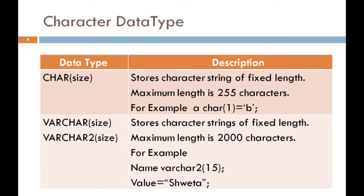Let's see an example. Suppose the column name is 'name', which has data type VARCHAR2 with a size of 15 characters. Suppose I enter the value 'Shweta' for name — only 6 characters are used, so the remaining characters do not occupy memory. In VARCHAR2, unused memory space is not wasted. While in CHAR, null characters are placed in the remaining space and they occupy memory. That's why in CHAR, memory may be wasted, but in VARCHAR2, memory is not wasted. So SQL developers prefer to use VARCHAR2 because memory is not wasted.